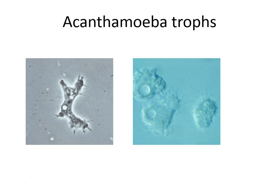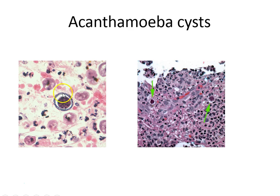Acanthamoeba has a troph and a cyst. The troph has spine-like projections around it, which are its pseudopods. The cyst has a ragged, wrinkled-looking double cell wall. This is usually seen in eye infections and can cause granulomatous amoebic encephalitis (GAE). It spreads from the lungs, can cause personality disorder lesions, or an eye infection from contact lens solution.